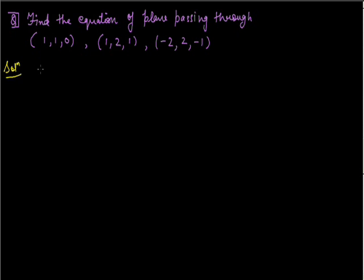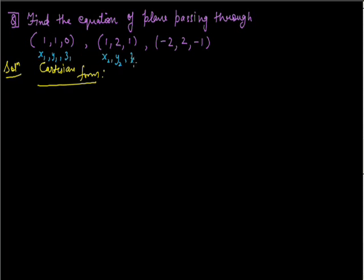Let's find the equation of the plane using the Cartesian form. To find the equation of plane in Cartesian form, let's take this point as (x1, y1, z1), this as (x2, y2, z2), and this as (x3, y3, z3). We know that the equation is given by: (x minus x1), (y minus y1), (z minus z1) in the first row.